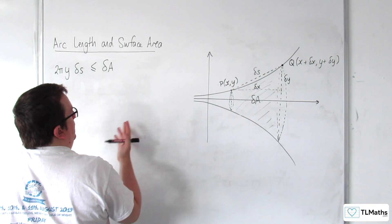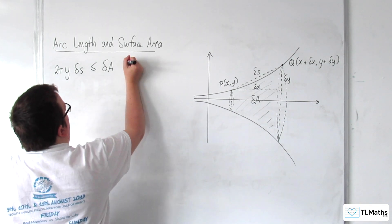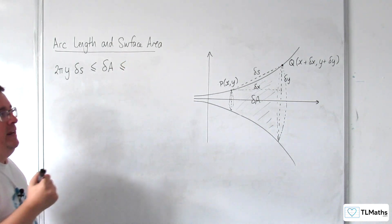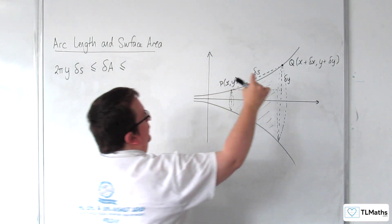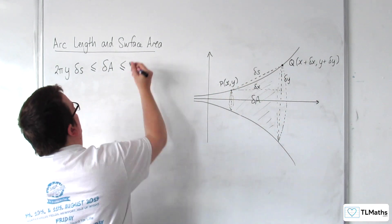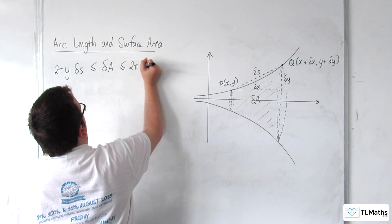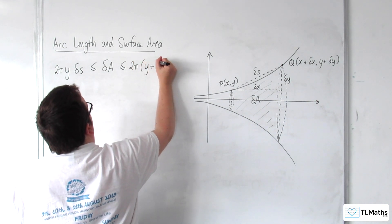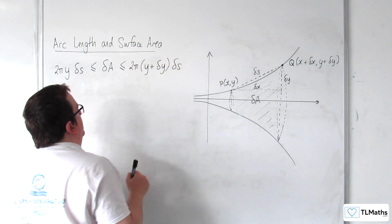But otherwise we would get a larger area. So we can write less than or equal to, so the circumference there would be 2π times (y + delta y) times by delta S.